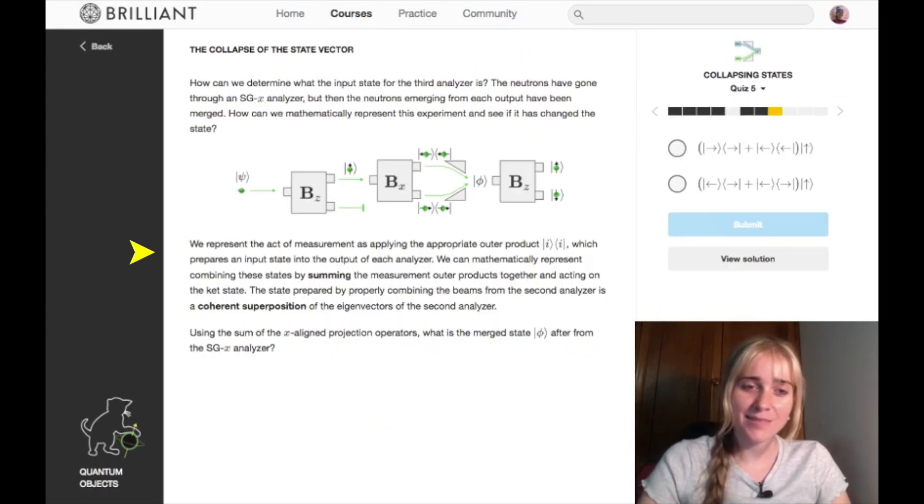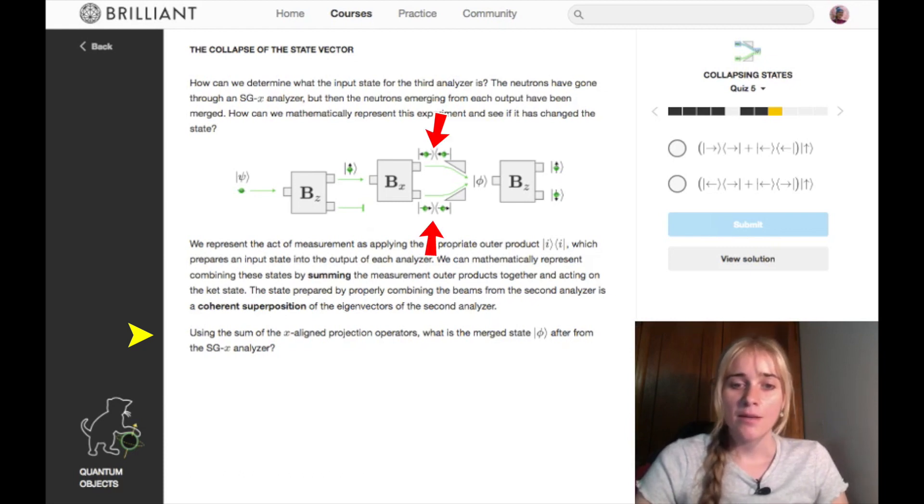So let's see how we're going to do that. Going back to our outer products, we use them to represent the act of measurement by applying this projection to our appropriate state. So these projection operators are going to be what we're going to use to represent essentially which channel the neutrons have passed through. We can mathematically represent combining these two states here by summing the measurement outer products together and acting on the ket state. The state prepared by properly combining the beams from the second analyzer is a coherent superposition of the eigenvectors of the second analyzer. So that's another way to say it, but it is this superposition that we're trying to represent mathematically. So using the sum of the X-aligned projection operators, that's just these here, what is the merged state after the SGX analyzer? Which one of these options sums these two projection operators?